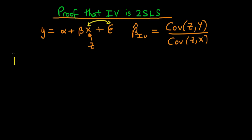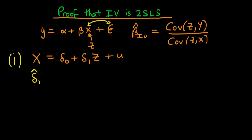I now want to show that this is equivalent to a two stage least squares estimator. The first stage is a regression of x on z. We know that our least squares estimator for δ₁ is given in the population by the covariance of z with x divided by the variance of z — that's just the normal form of the least squares estimator.